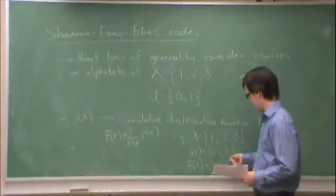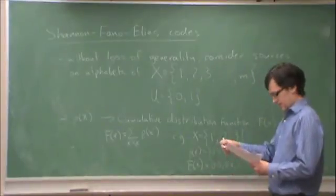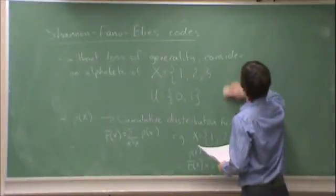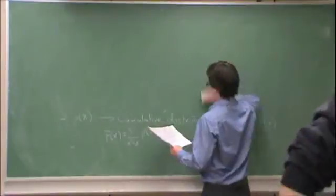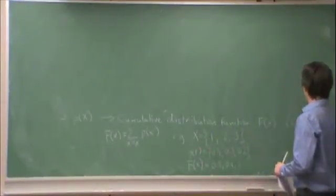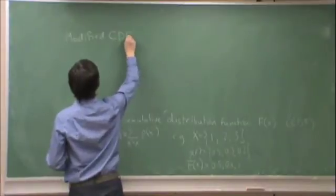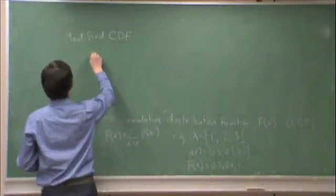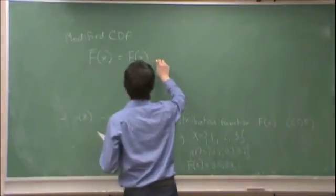So in other words, each element of f of x is the sum of this probability plus everything less than, or plus all of the source letters less than x. So bearing in mind that definition of the cumulative distribution function, let's get a modified CDF, we'll call this the CDF. A modified CDF, let's write this as f bar of x, which is equal to f of x plus one half of p of x.